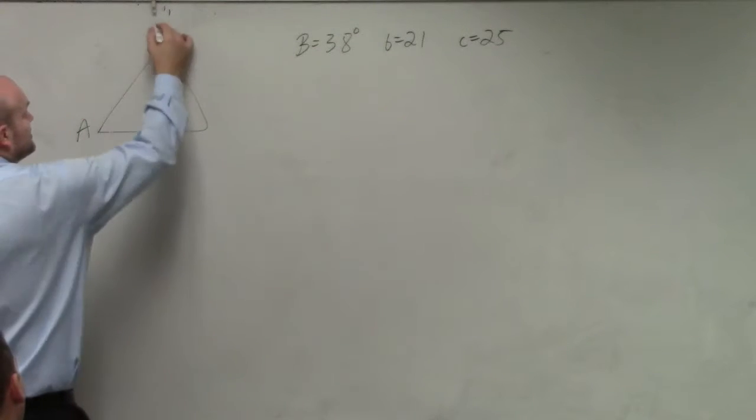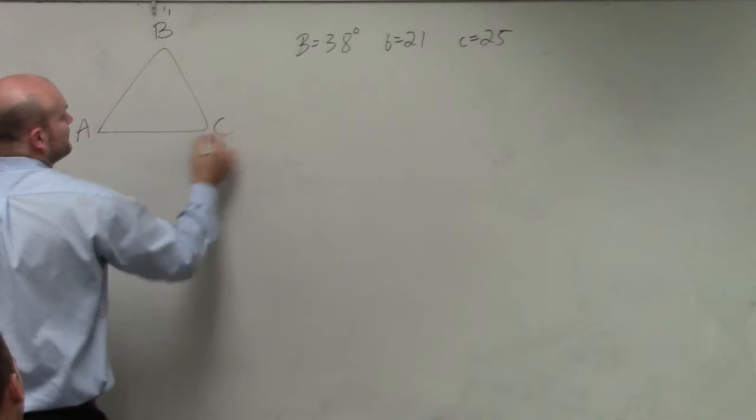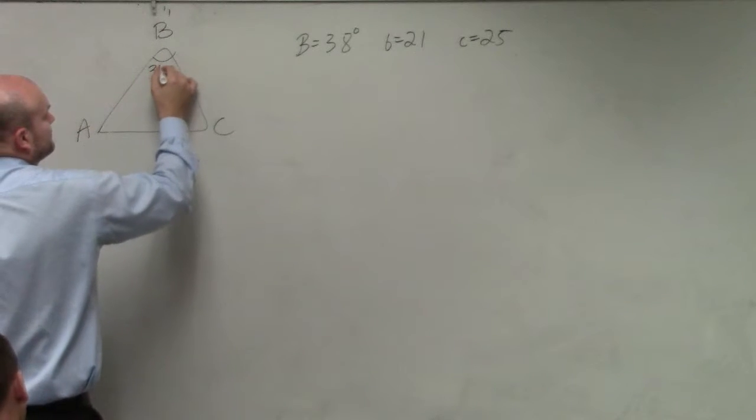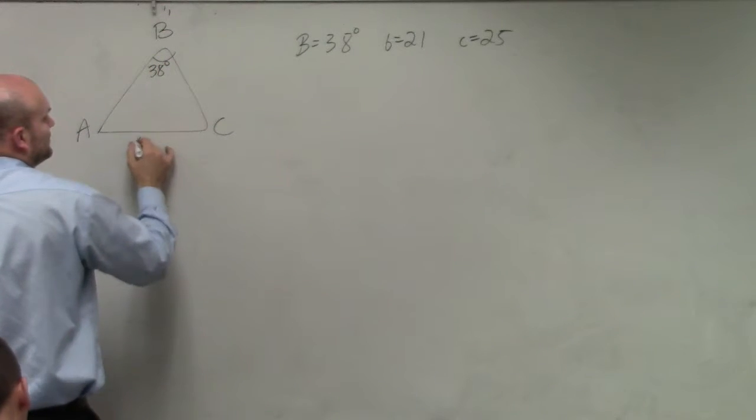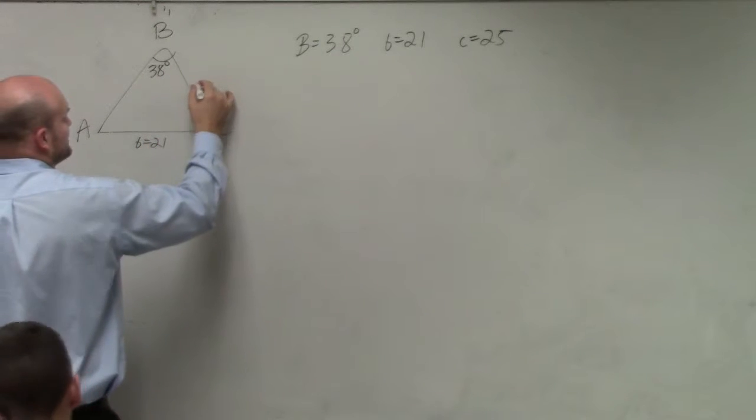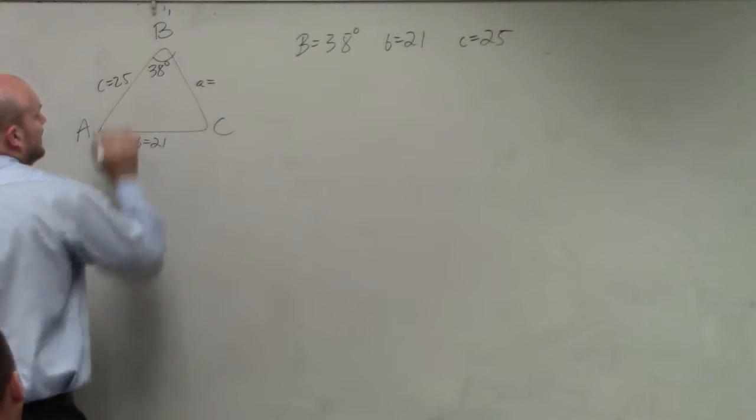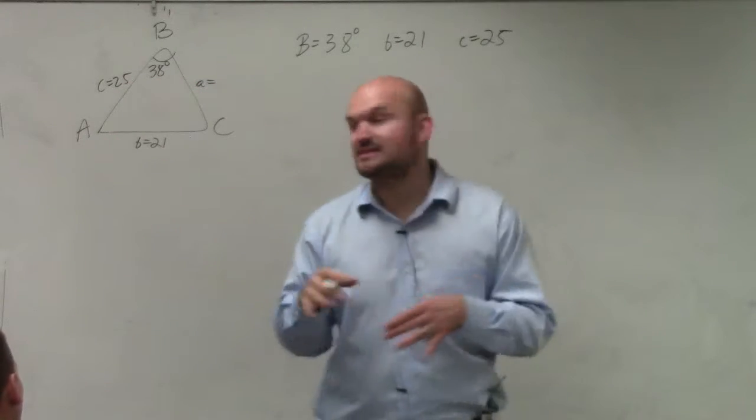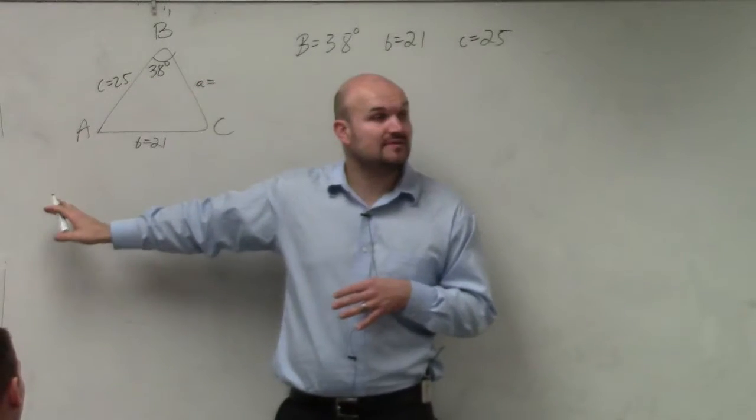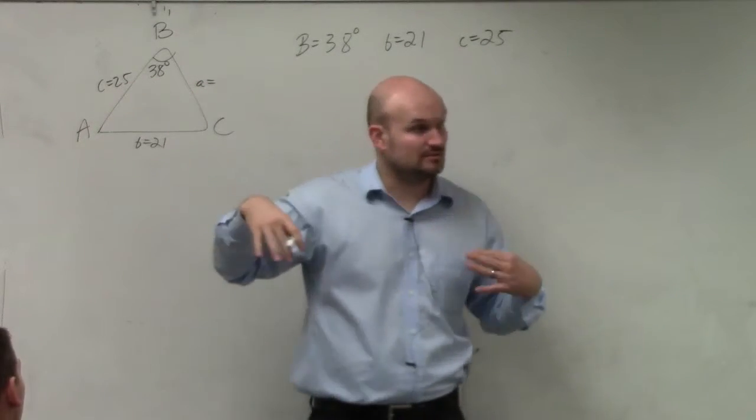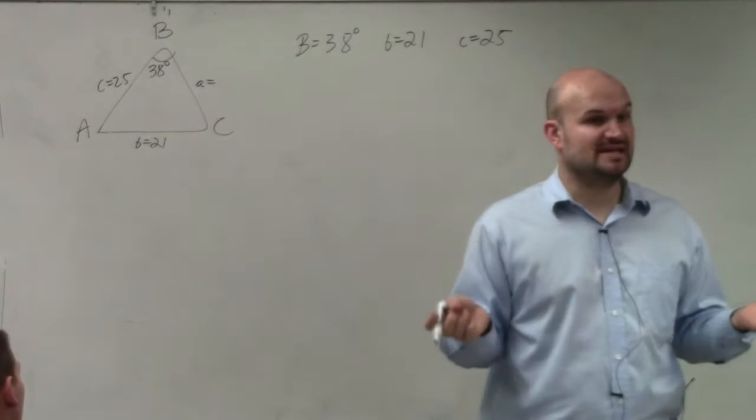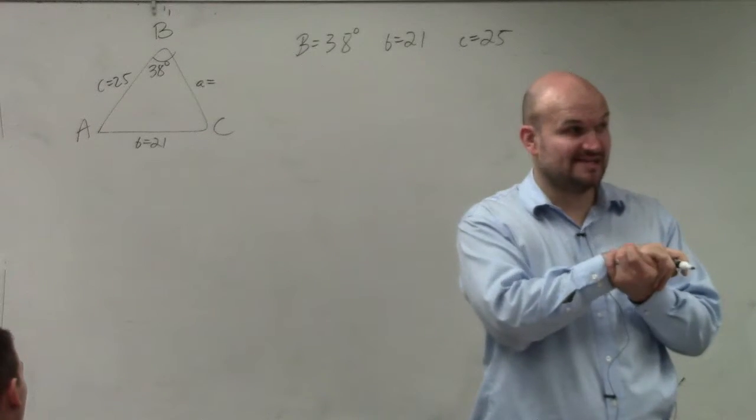It doesn't really matter what your triangle looks like. You can go ahead and fill everything in later. But I want you guys to see from this information now, we have a side-side angle, right? So we have an ambiguous case. So we have a possibility of case two, correct?